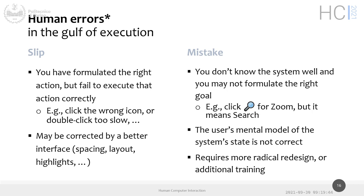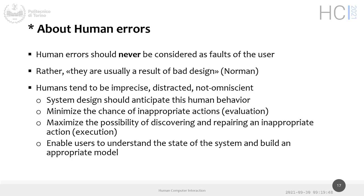A human error is never to blame on the user. An error is an objective action: something that should have been A and instead was B. But the human error is never the fault of the user. Every night before going to sleep, repeat: 'The user is never wrong; it's never the fault of the user.' If the user makes an error, the fault is with the interface — the fault is with the system. The responsibility is always of the system, never of the user.